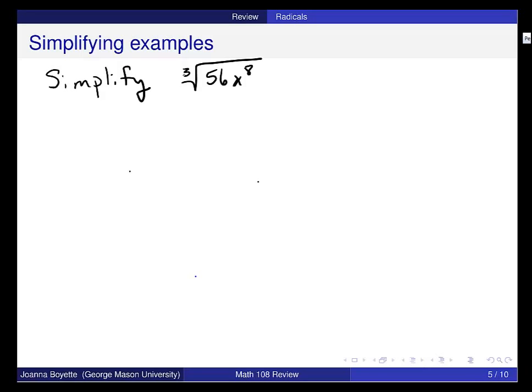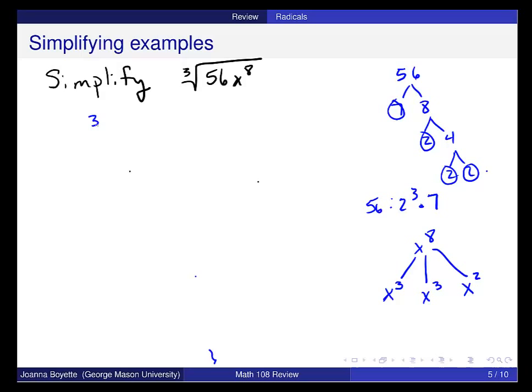So the first thing is to identify the perfect cubes that are inside 56. If you're not familiar with those, one way to do that is to factor this into its prime factorization. So 56 is 2 cubed times 7. This 2 cubed will come out because the cubed root of something cubed will simplify. The same idea holds for x to the 8th. The pieces that will simplify are powers of 3, so x cubed will come out. There's a second x cubed, and then there's an x squared.